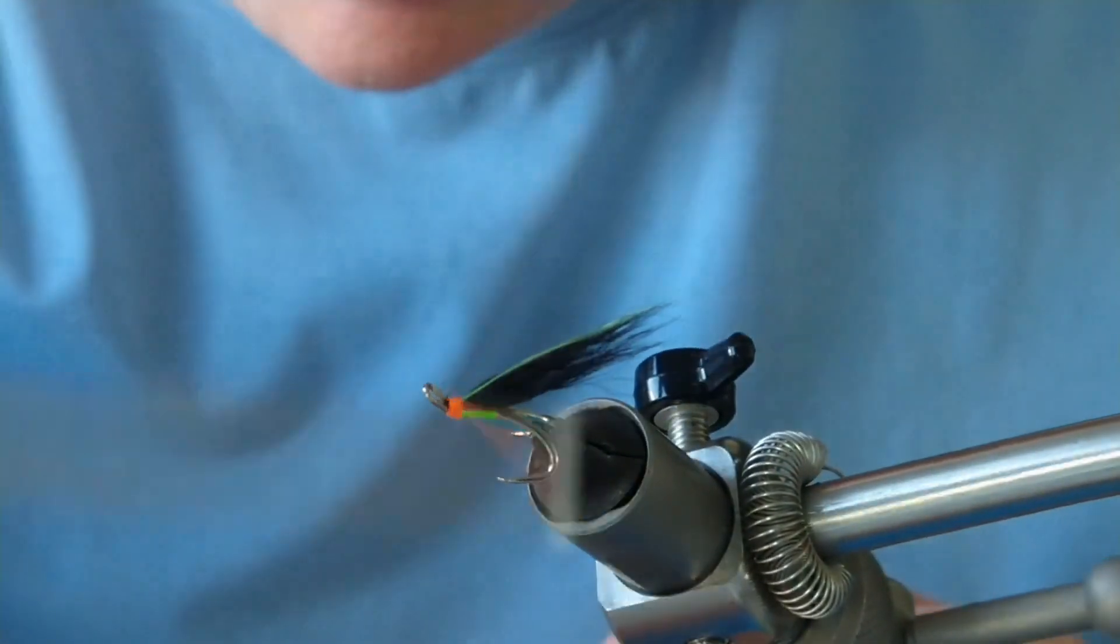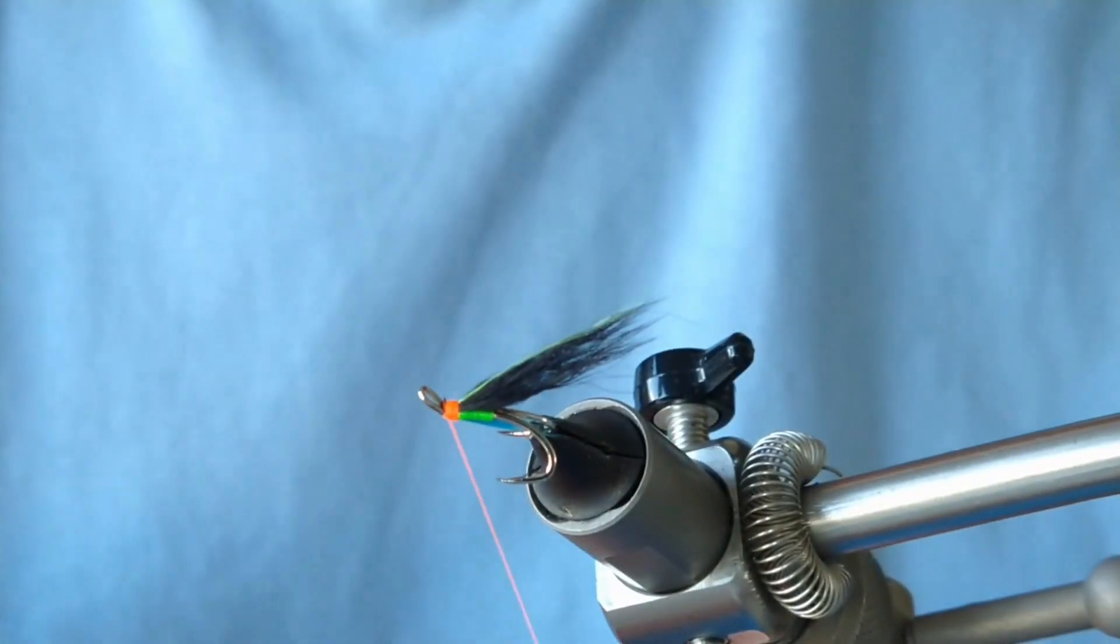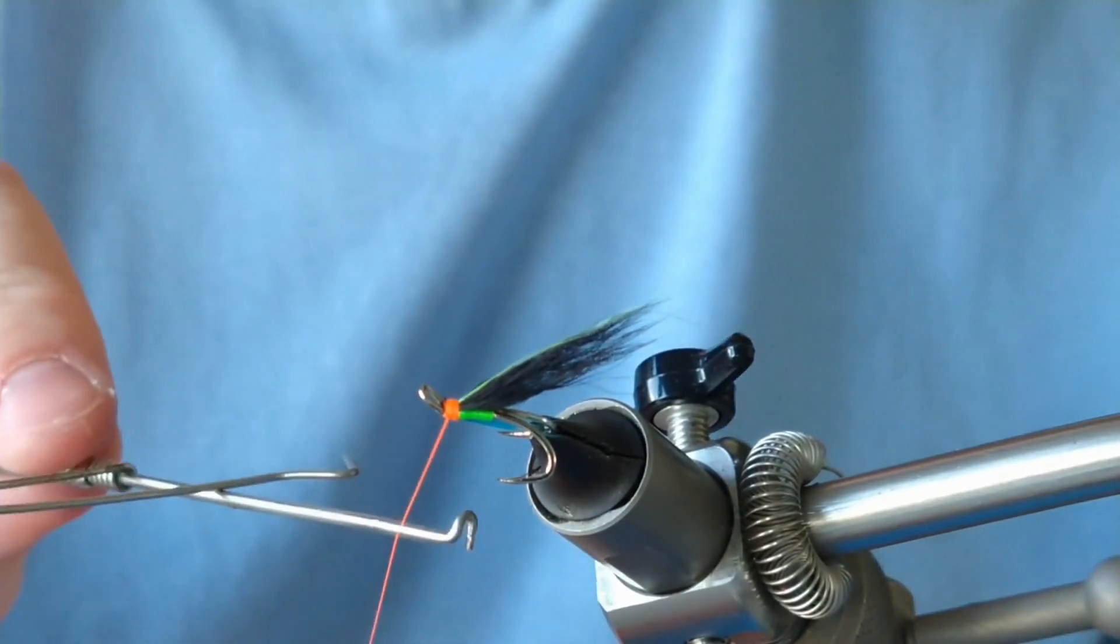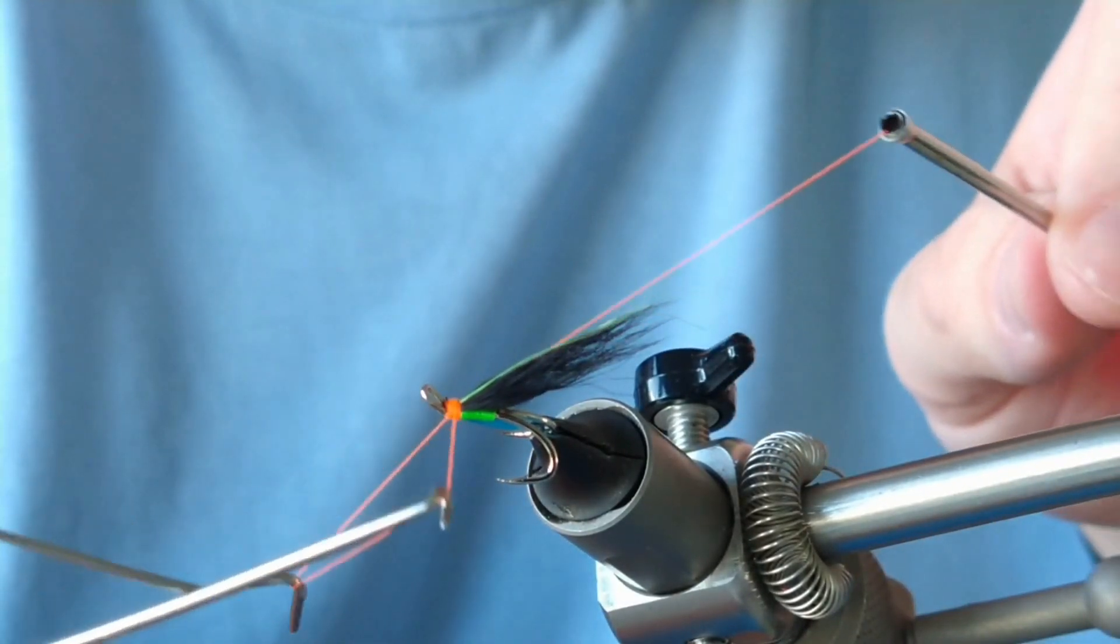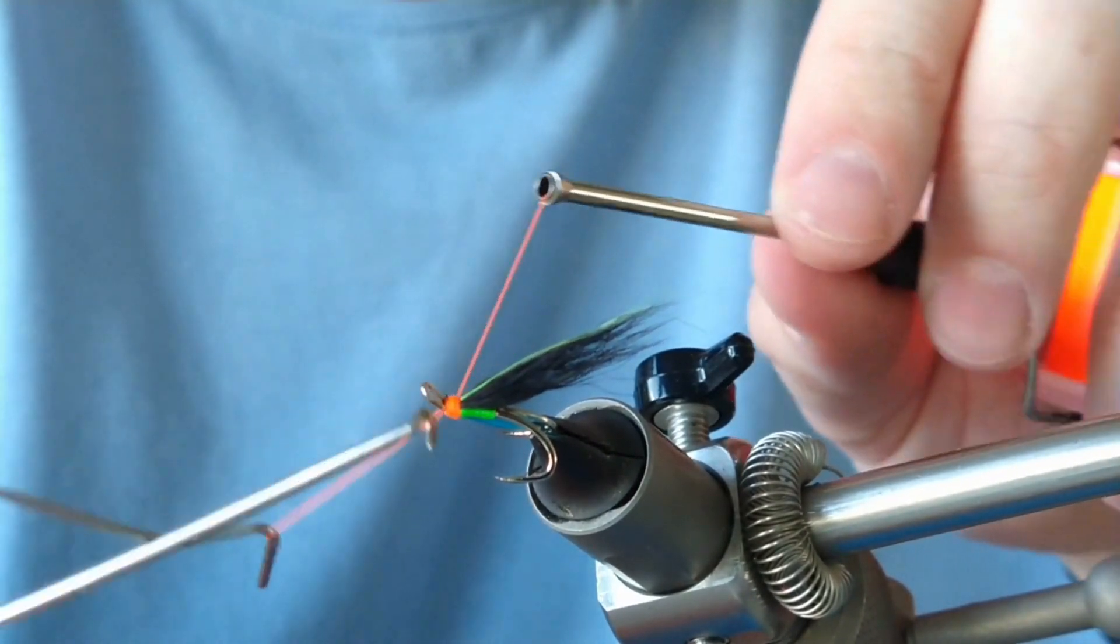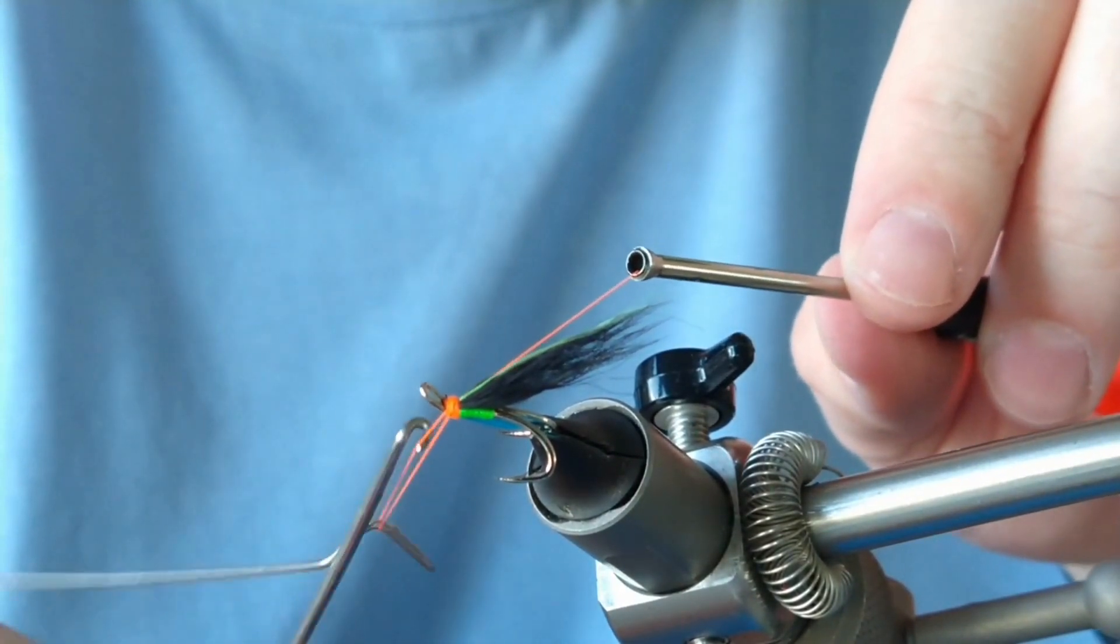Start tightening that up, and then last thing you need to do is just do a whip finish. Four or five turns of whip finish, and a little bit of a mess ahead here but that's it.